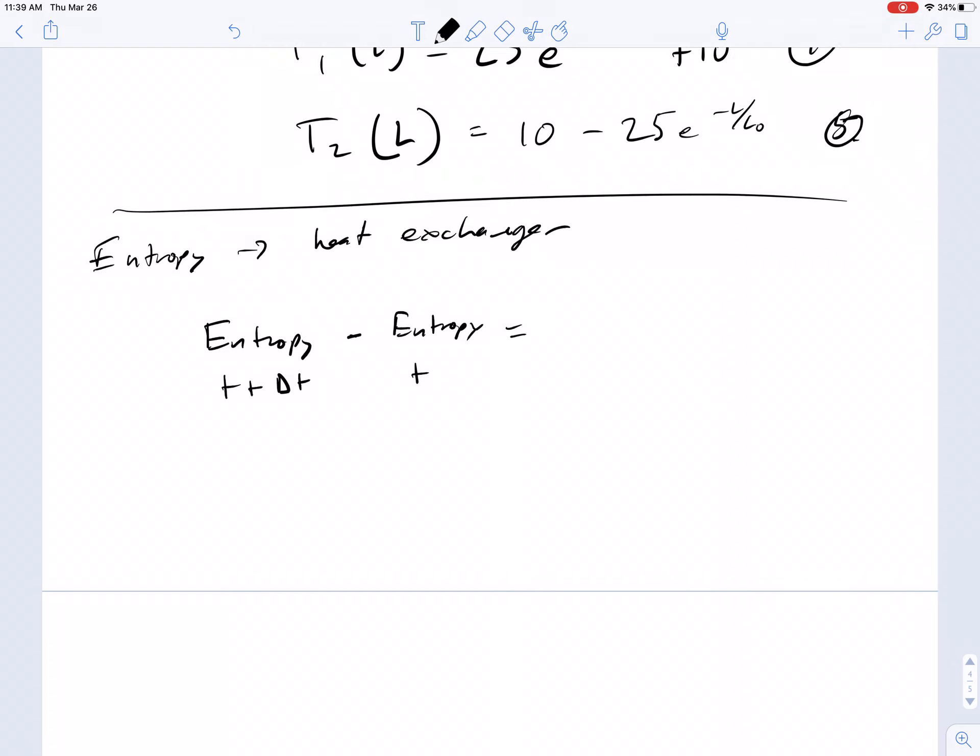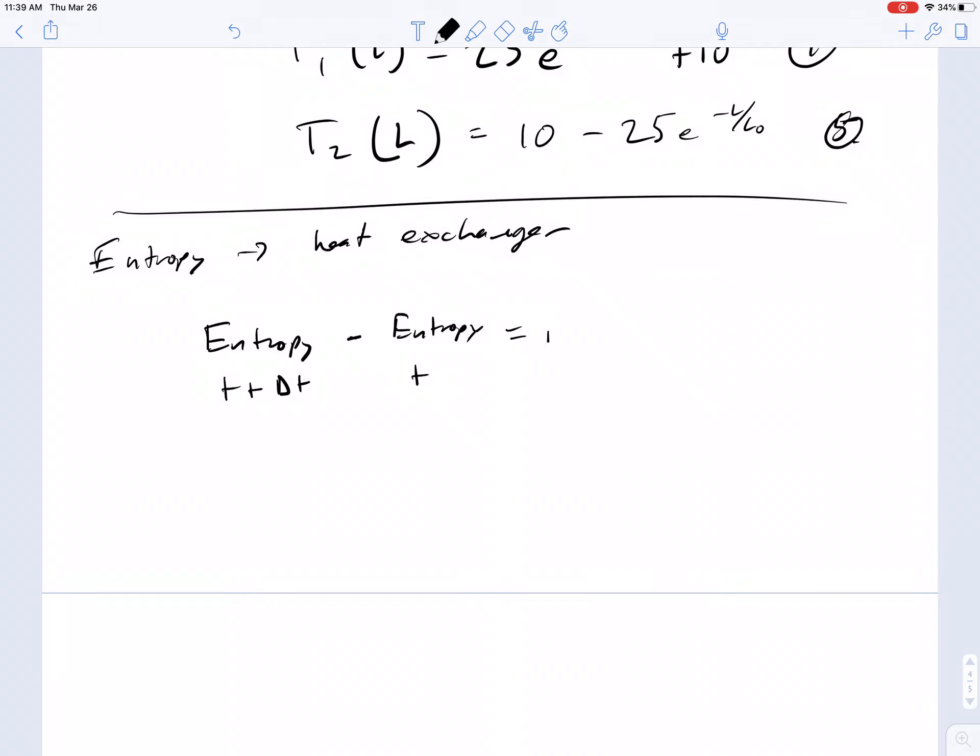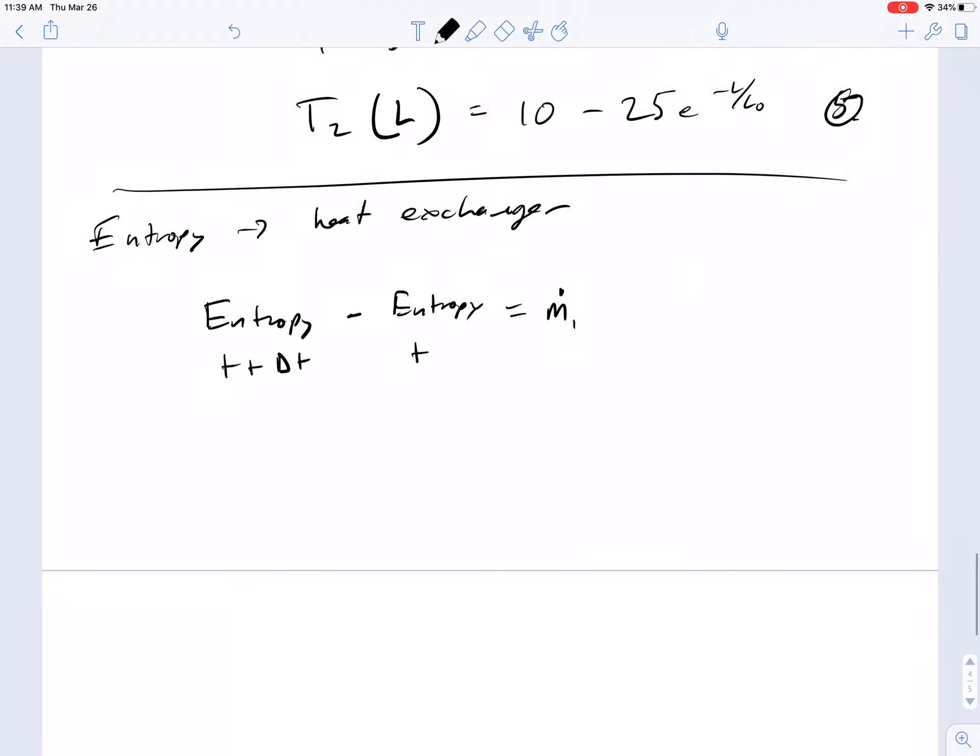It's going to be equal to the entropy that comes in from flow, so the mass flow rate in stream one times the entropy in that mass flow rate times delta T minus the amount leaving, so this is the SL plus delta L.